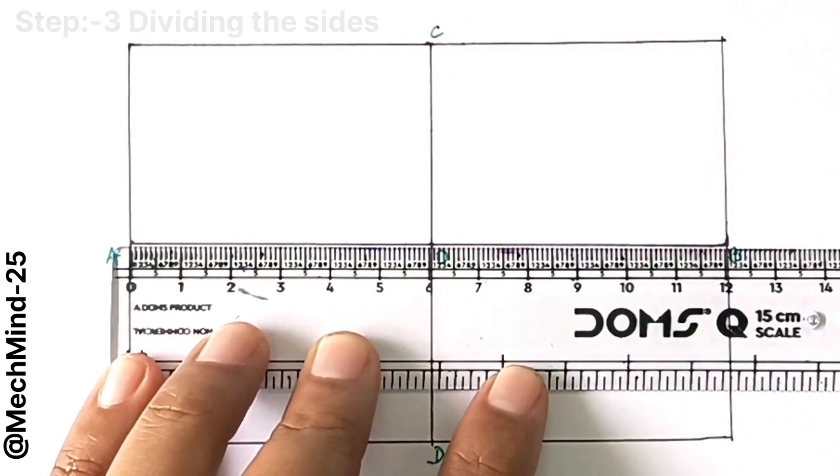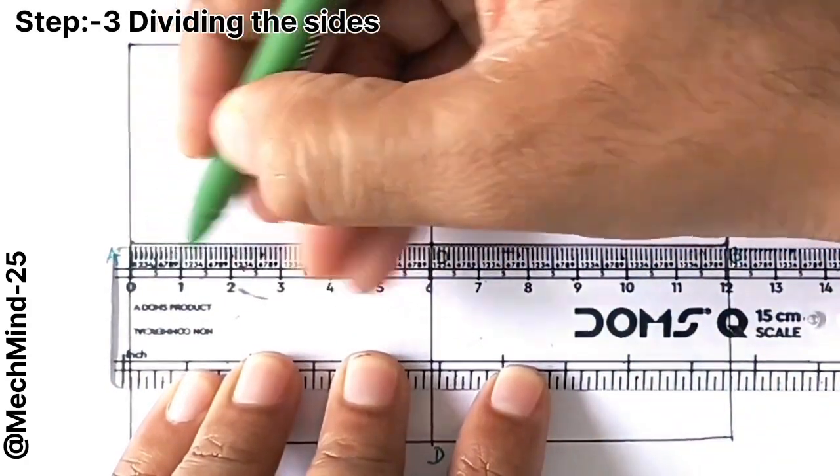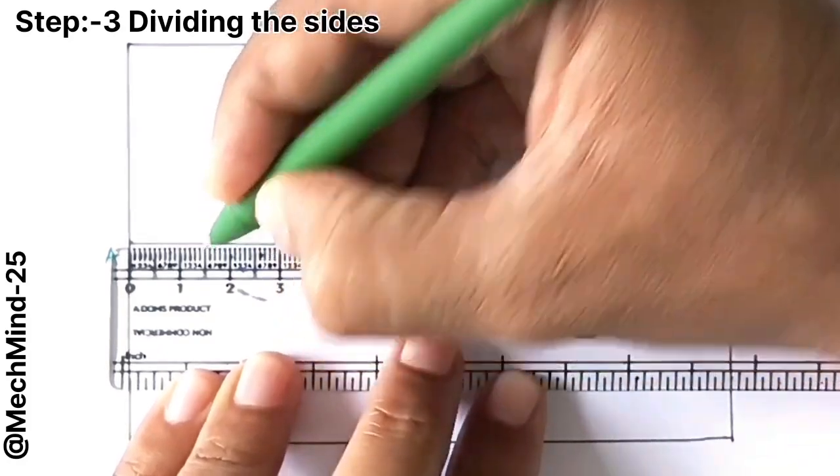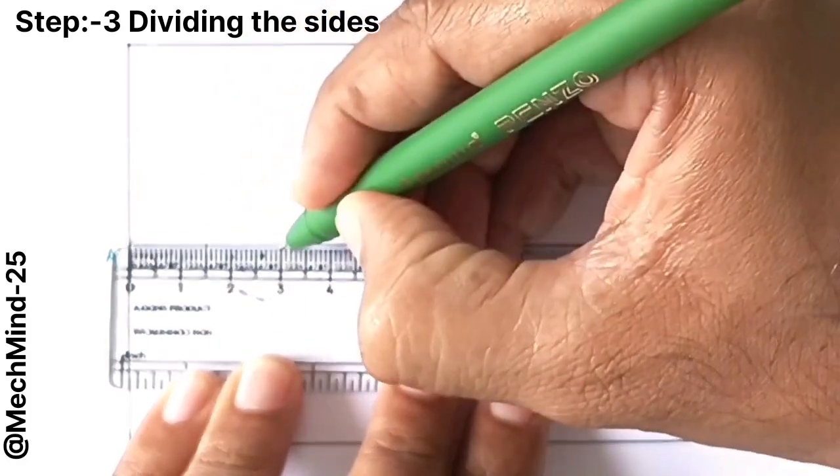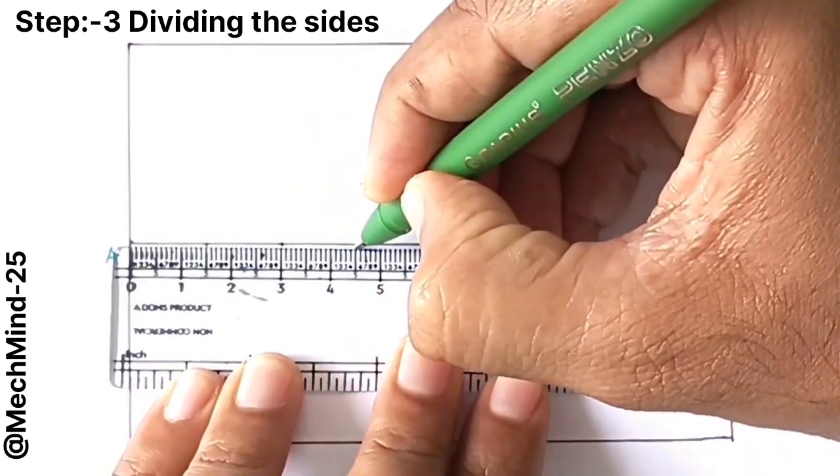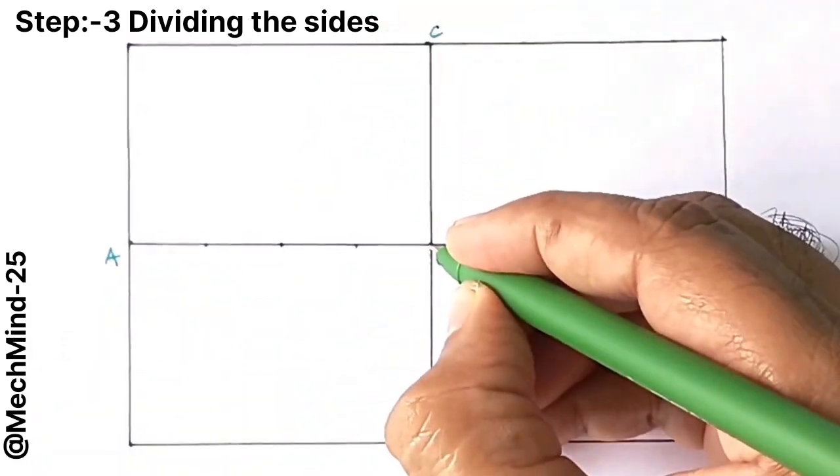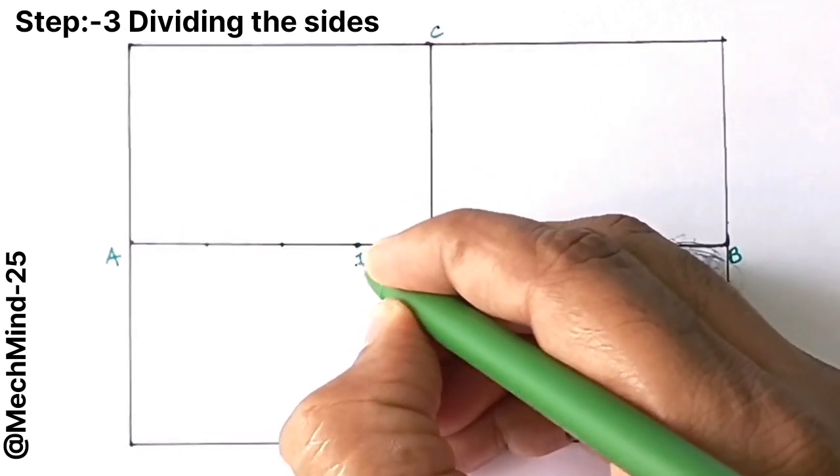Next step is dividing the sides. We have to divide the line OA into equal parts. The horizontal line OA is 60 millimeter long, so we will divide it into four equal parts of 15 millimeter each. Mark the points as 1, 2, 3 and 4.